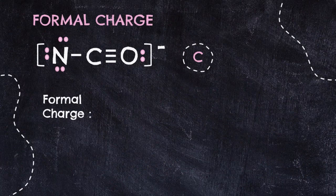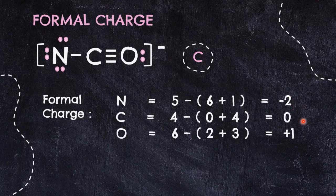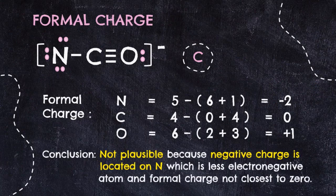Even though we have already determined structure B as the most plausible, we still need to give reasons why the other structures are not eligible. For structure C, nitrogen has −2 formal charge, carbon has 0, and oxygen has +1 formal charge. This structure disobeys two priorities: the formal charges are far from zero (a large gap between 0 and −2), and the less electronegative atom nitrogen carries the negative charge. Therefore, structure C is not the most plausible structure for NCO⁻.